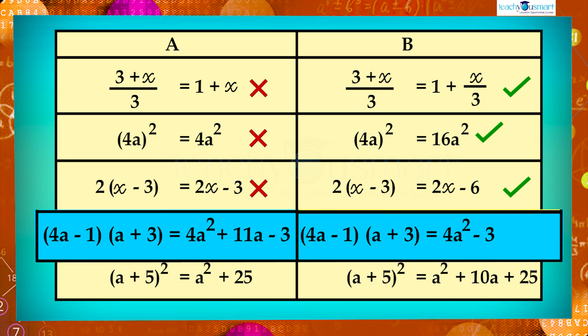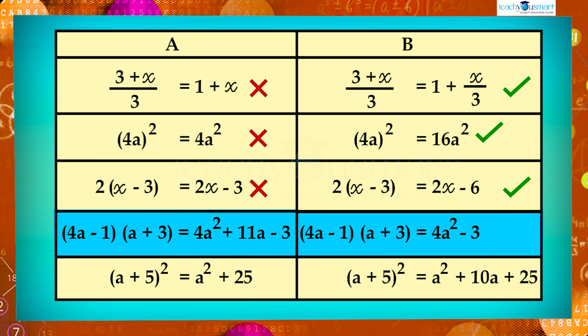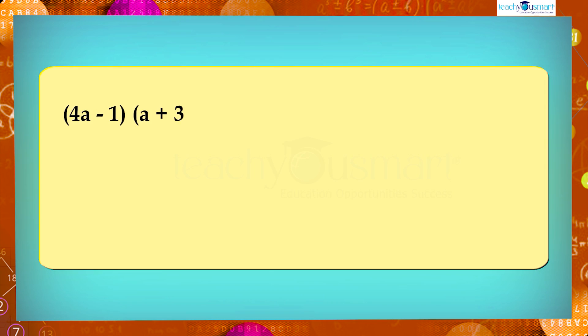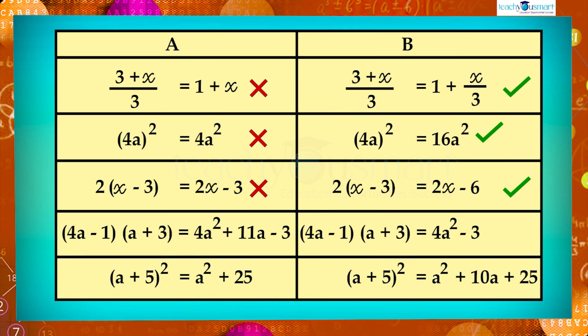And in next calculation we can again use the distributive property. That is, in 4a minus 1 multiplied by a plus 3, we multiply each term of second expression with every term of first expression. 4a minus 1 multiplied by a plus 3 equals 4a multiplied by a plus 4a multiplied by 3 minus 1 multiplied by a minus 1 multiplied by 3, equals 4a square plus 12a minus a minus 3, equals 4a square plus 11a minus 3. So A is correct.